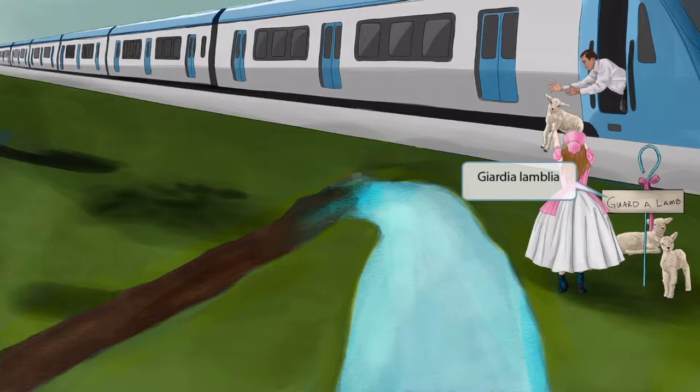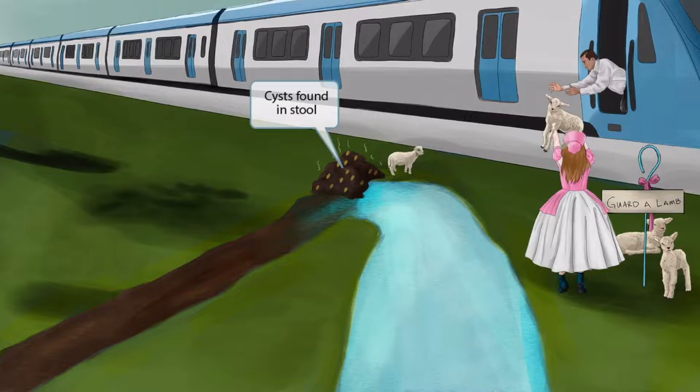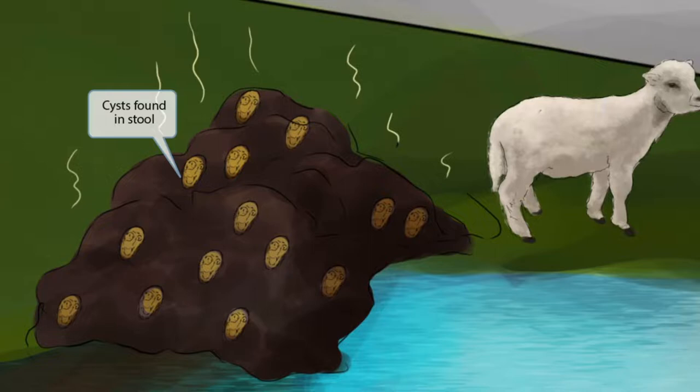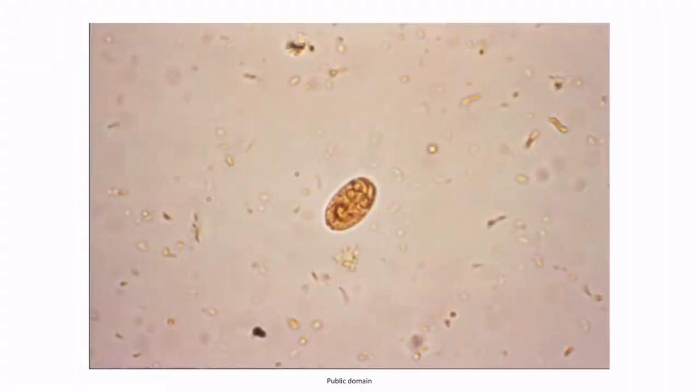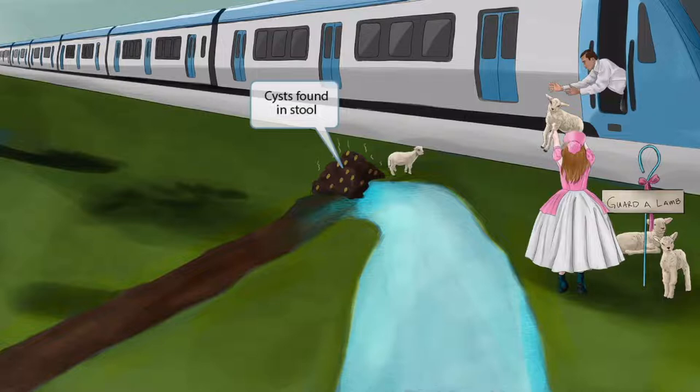Like any pet, lambs will poop a lot unless you direct them toward a certain area. The girl has directed her lambs to poop right here in this big pile. You can even see this little lamb has just finished up. If you look closely at this big pile of poop, you can see these little cysts — this represents the Giardia cysts that are present in the stool. Here is a microscopic image of one of the Giardia cysts; you can see that this cyst has two distinct nuclei. Being able to recognize Giardia cysts is important, so don't gloss over this image. Cysts in the poo pile stands for cysts in the stool.